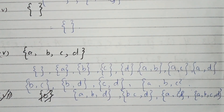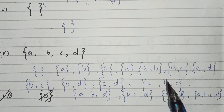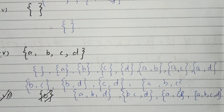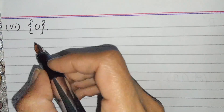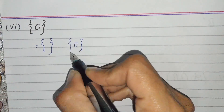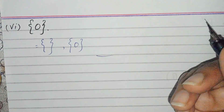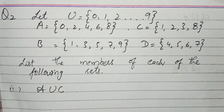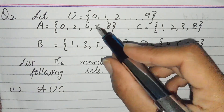These are the members of the power set of {a,b,c,d}. There are four elements, and all possible subsets are written. These are the members of the power set of ABCD. Part number six: we write the empty set and then {0} in the set. Question number one is done.